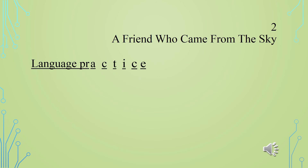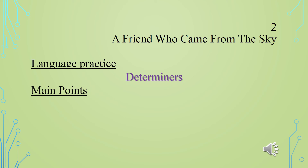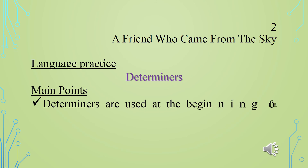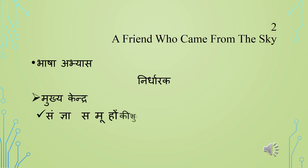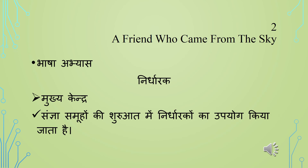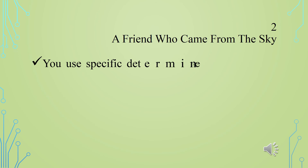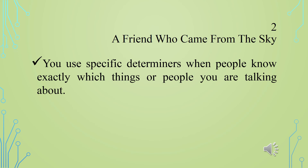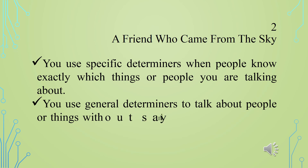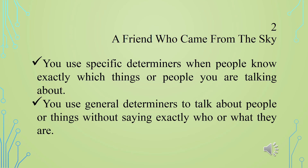Language Practice: Determiners. Main Points: Determiners are used at the beginning of noun groups. Bhaasha Abhyas — Nirdharak — Mukhyakendra: Sangya samoohon ki shuruat mein nirdharakon ka upyog kiya jata hai. You use specific determiners when people know exactly which things or people you are talking about. You use general determiners to talk about people or things without saying exactly who or what they are.